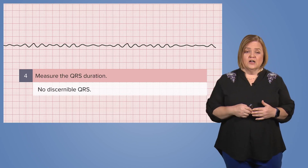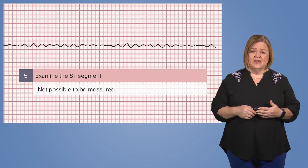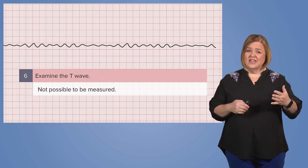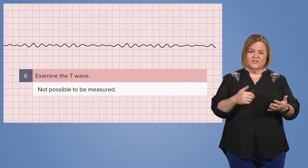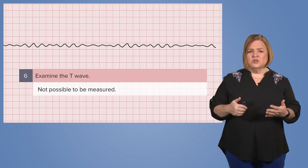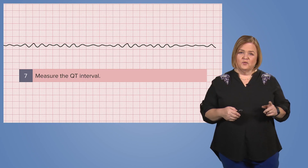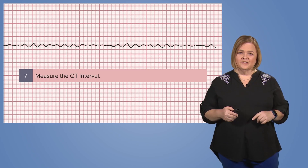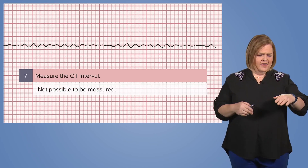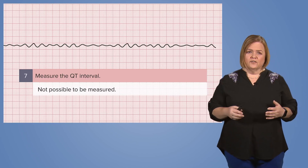We have no discernible QRS complexes, so we can't do number 5. You can't examine the ST segment, and you can't do number 6 either. So steps 1 through 6 — we can't perform them because we don't have discernible waves. I bet you can guess on number 7 if we can or cannot. That's right, you can't measure it. That squiggly line — we can't get much data off of it.